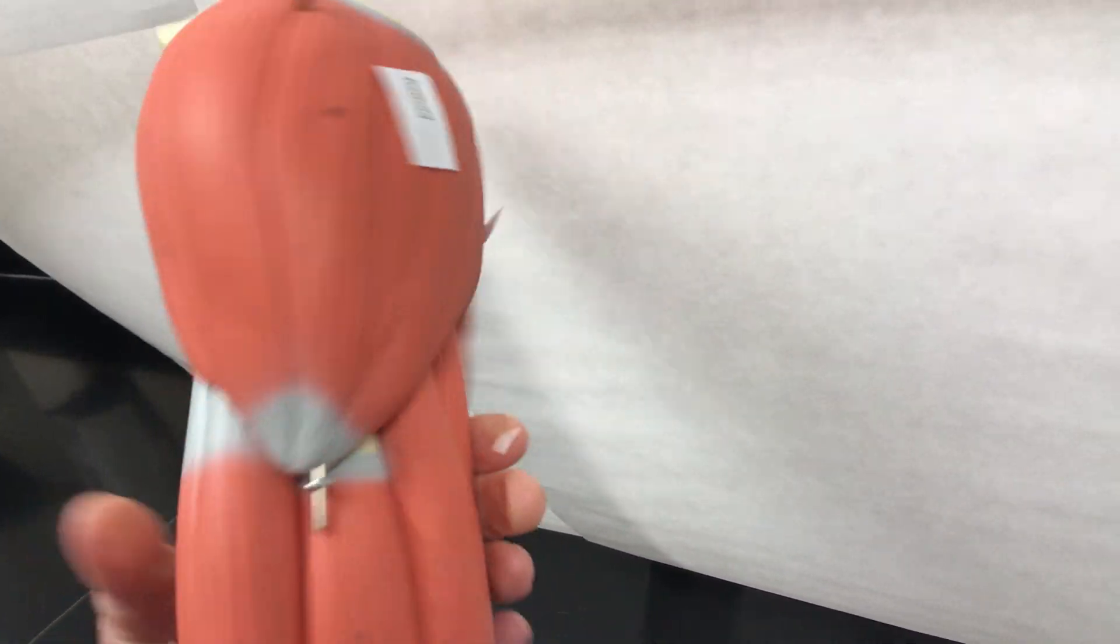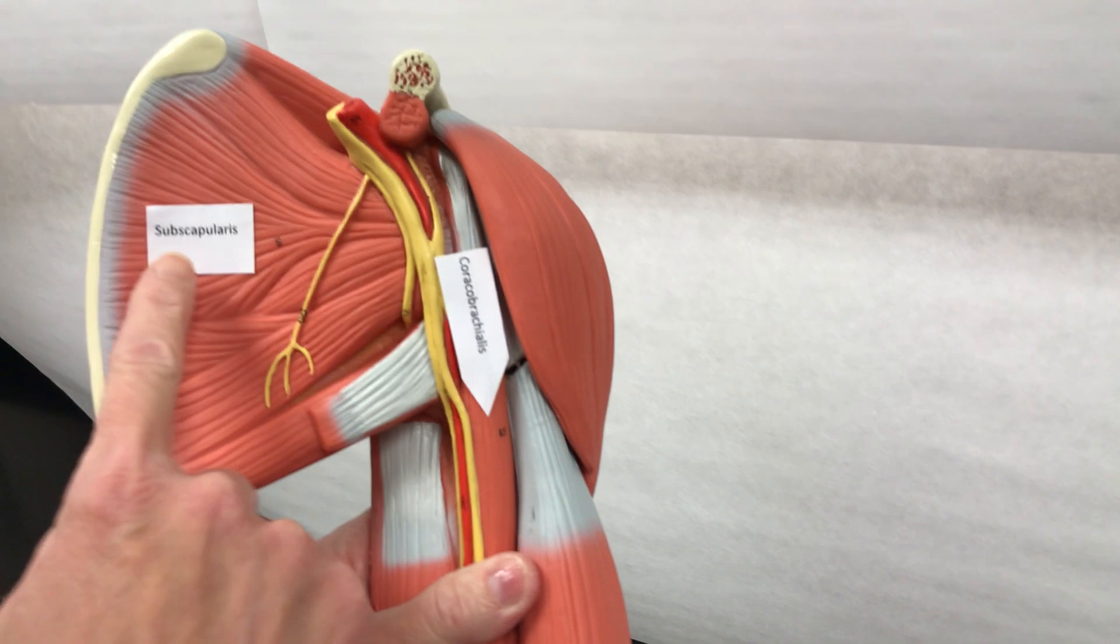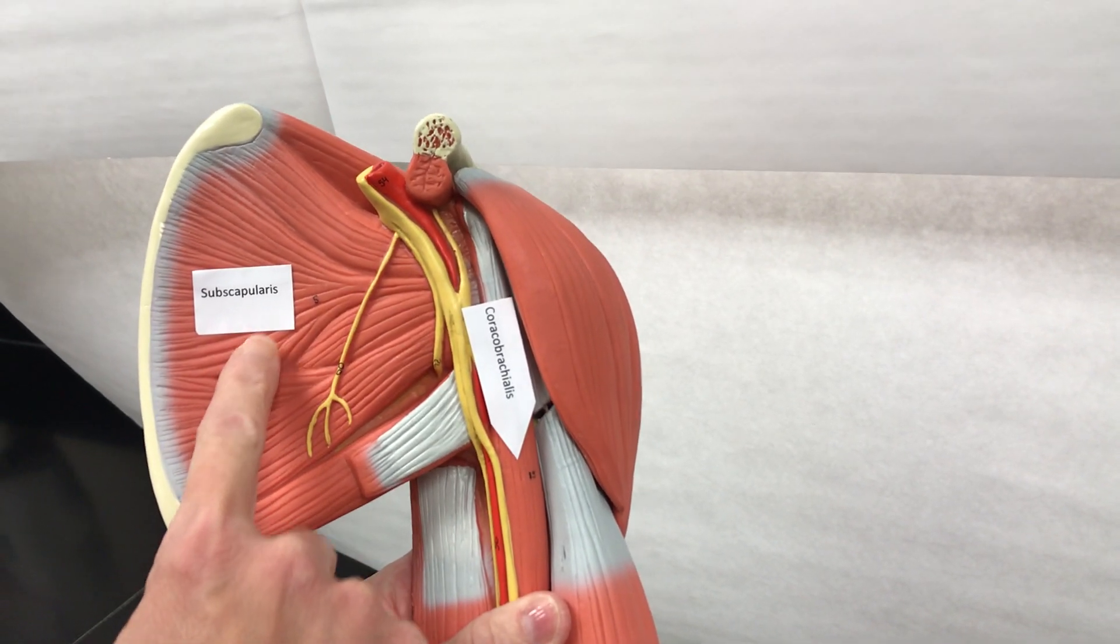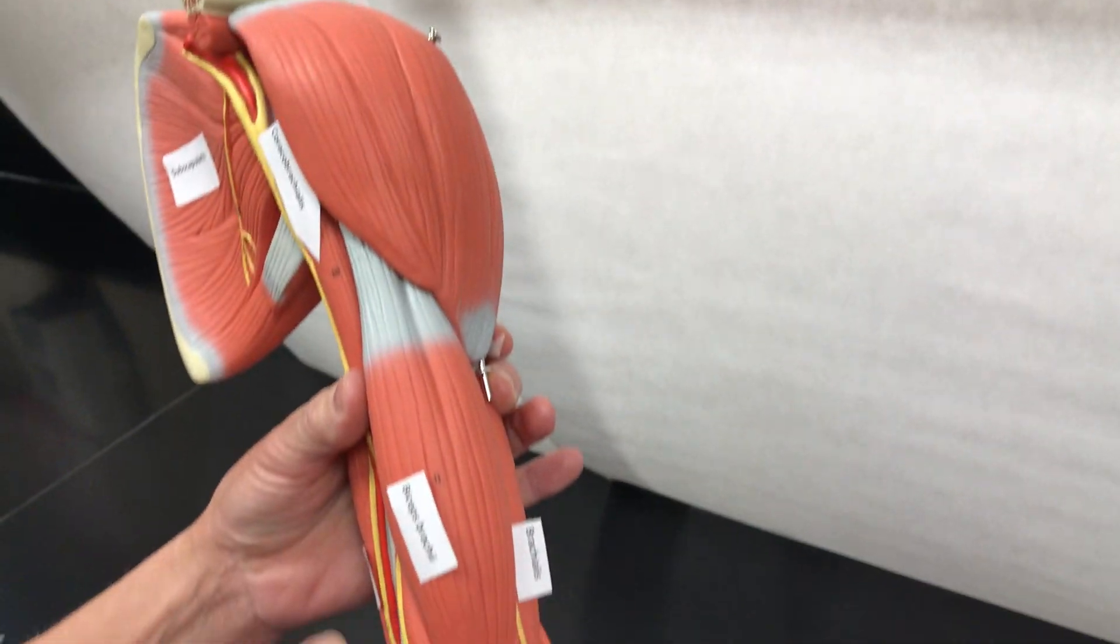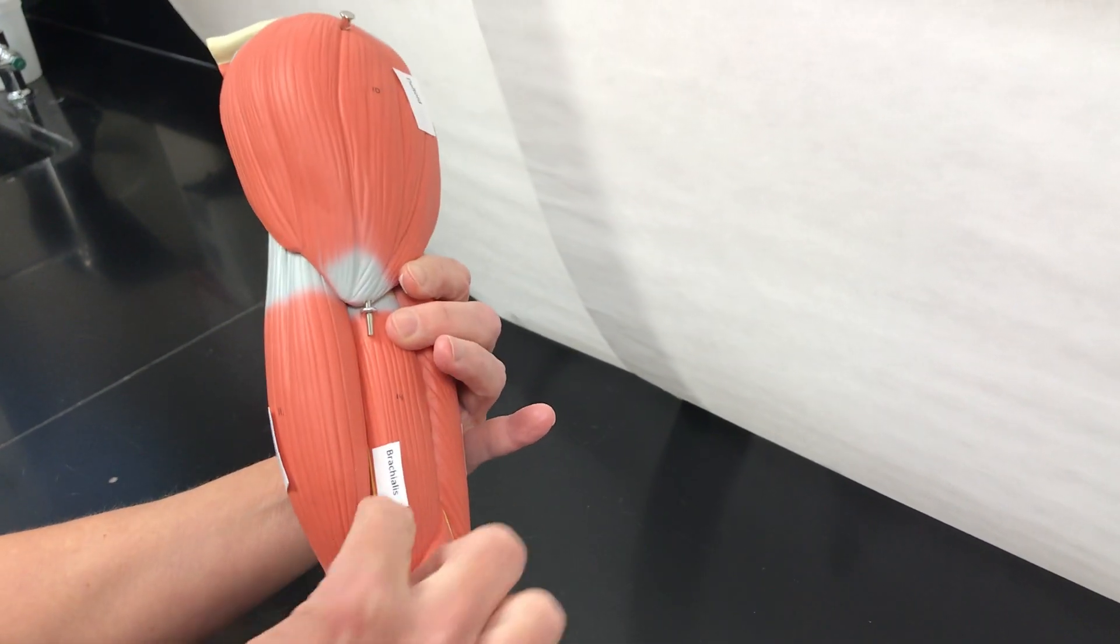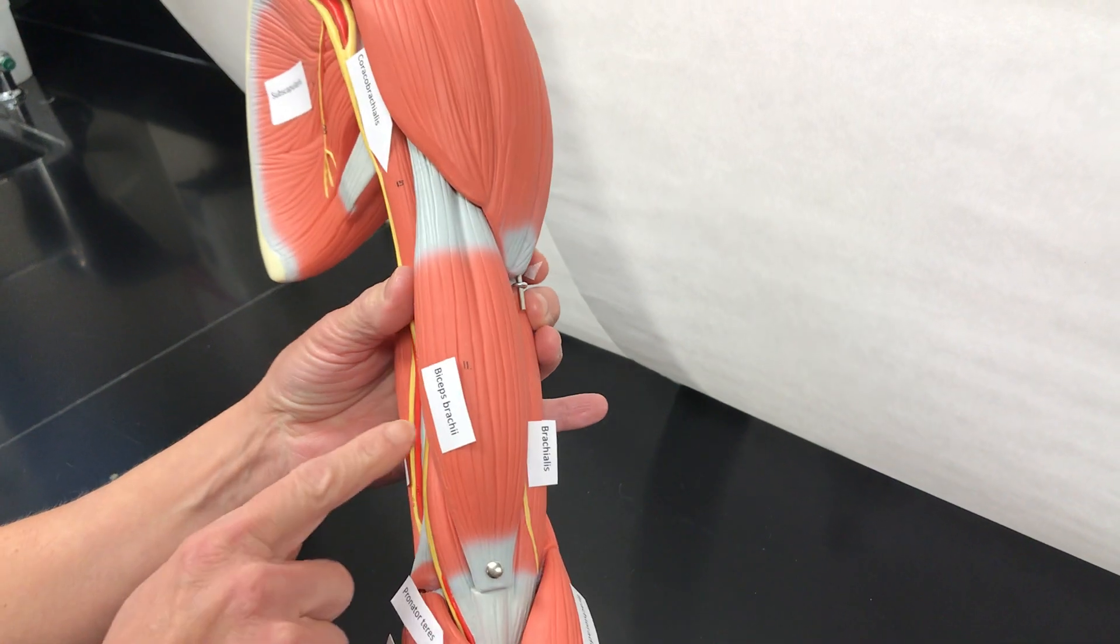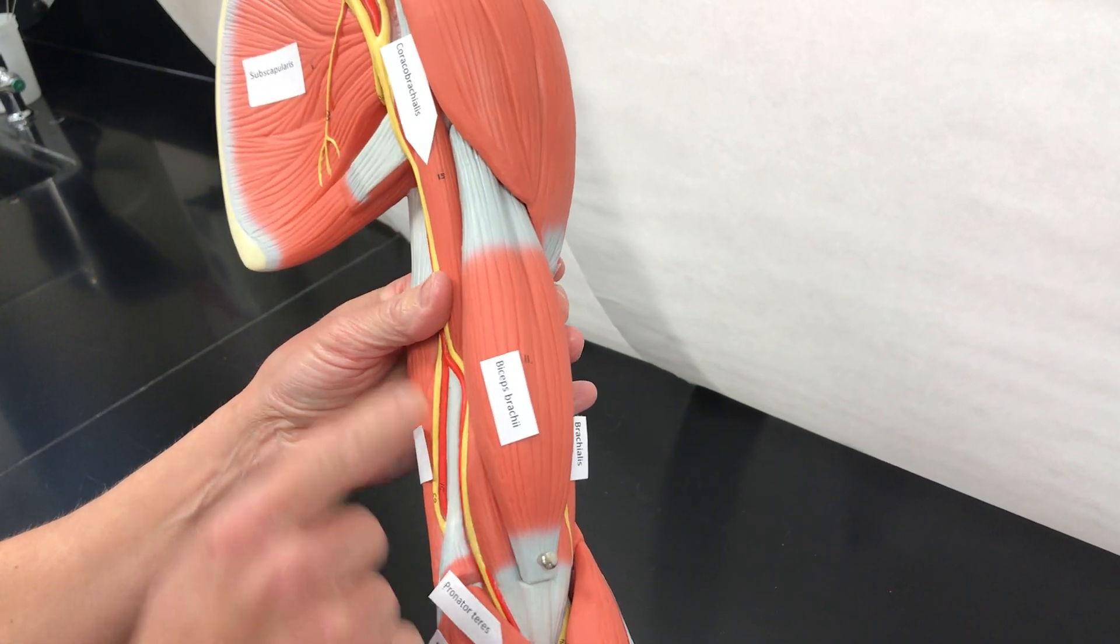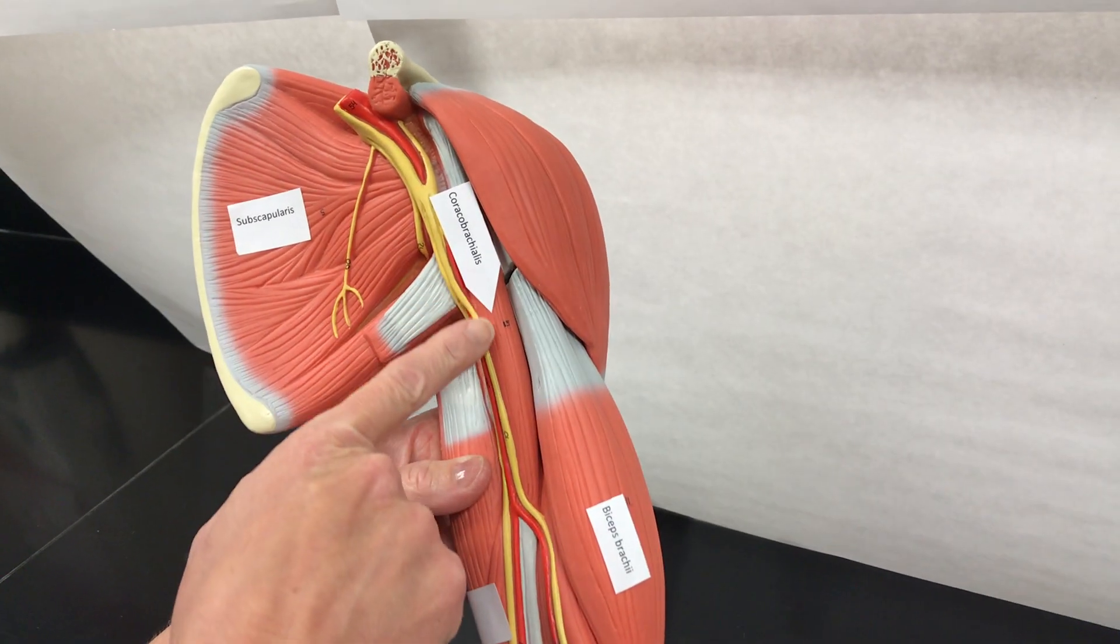and underneath the scapula we have the subscapularis. Then we have the muscles of the upper arm. We have the biceps brachii. Underneath that we have the brachialis, so this side is also brachialis. This is the coracobrachialis.